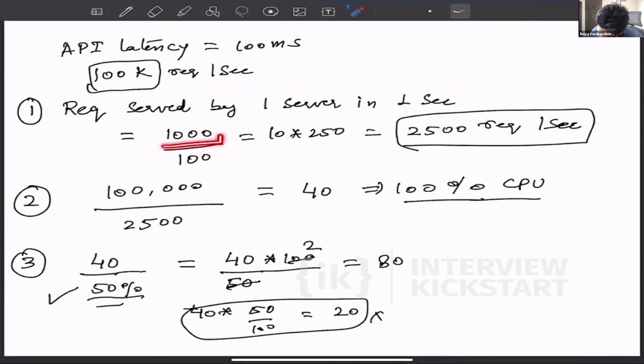Now we know that one second is 1,000 milliseconds, and we know that 100 milliseconds is taken by one API call. So that means my one thread will be able to serve 10 requests per second. And how many threads are there in one server? There are 250 threads that we have seen in the previous important numbers to remember. So that means one commodity server can serve 2,500 requests per second.